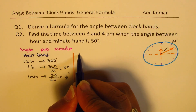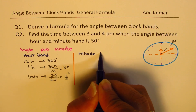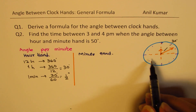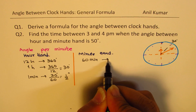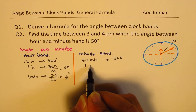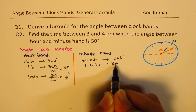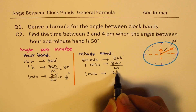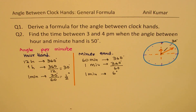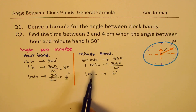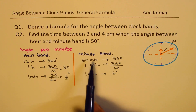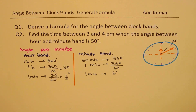Now let's do the same calculation for the minute hand. When we look into the minutes, in all there are 60 minutes and 360 degrees. One minute will be 360 degrees divided by 60, so one minute gives us 6 degrees. So we have a difference here in movement: the hour hand gives half a degree per minute, and the minute hand gives 6 degrees per minute.